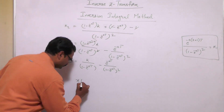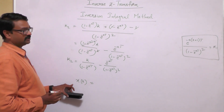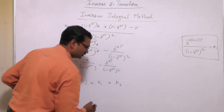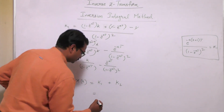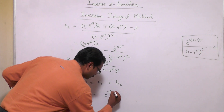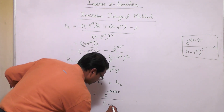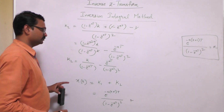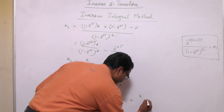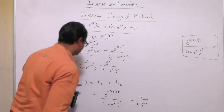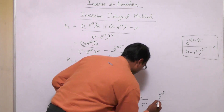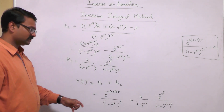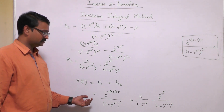So X(k) = K1 + K2, which are the residues obtained. K1 is e^(-a(k+1)T) / (1-e^(-aT))², and K2 is the algebraic sum of k/(1-e^(-aT)) - e^(-aT)/(1-e^(-aT))². This is the final result using the inversion integral method, which matches the result from other inverse Z-transform methods.